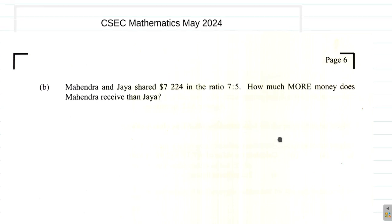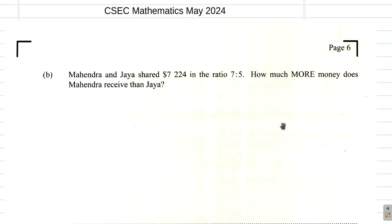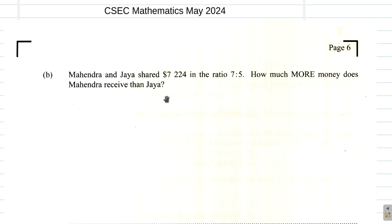Let's look at part B of question 1 from the May 2024 CSEP Mathematics past paper. It says Mahendra and Jaya shared $7,224 in the ratio 7 to 5. How much more money does Mahendra receive than Jaya?